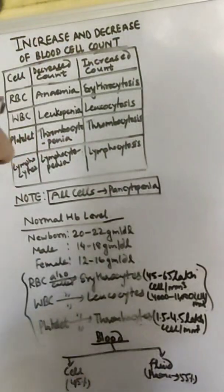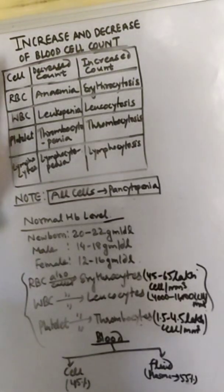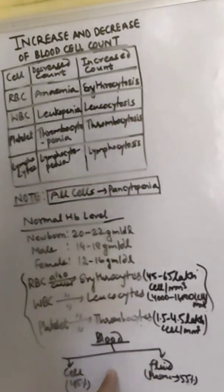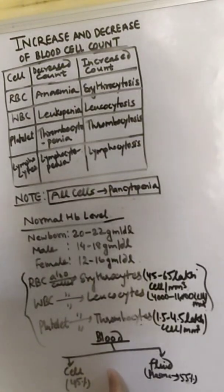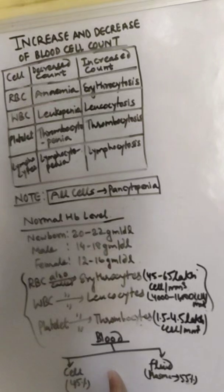Namaste everyone. Today we are going to discuss about blood, cell increase and decrease count. So what is blood? Blood is a liquid connective tissue which provides nutrients to different parts of the body.